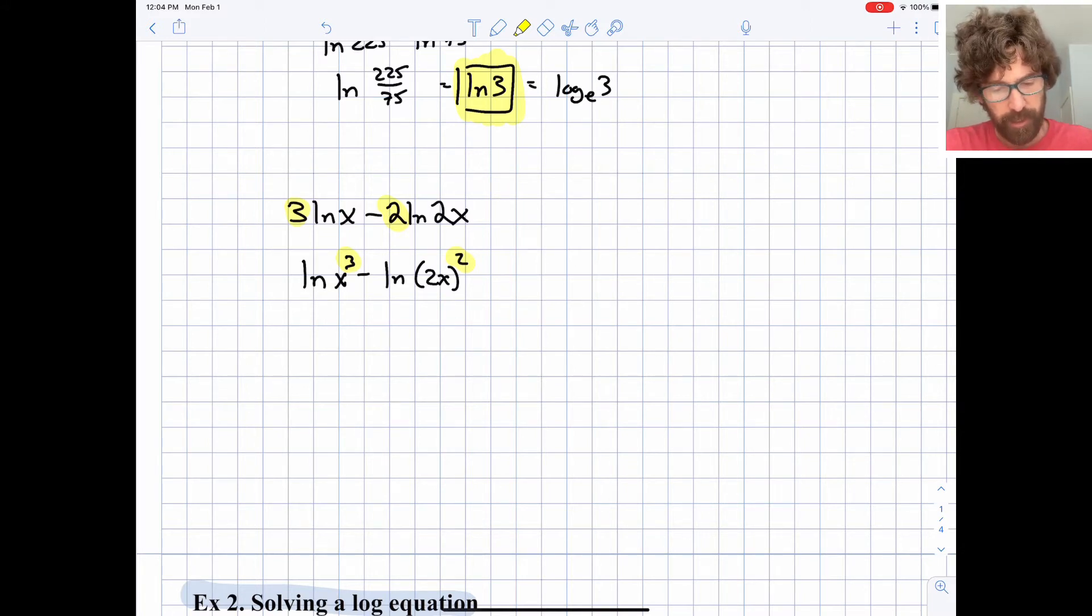And then we can do a little bit more simplifying. I'll do natural log of x cubed minus the natural log of 4x squared. I'll apply that exponent of 2 to both pieces. The 2 and the x.